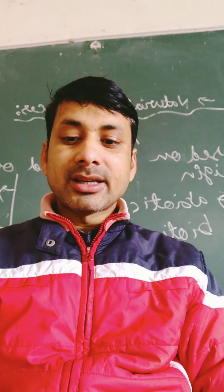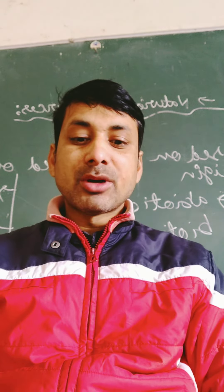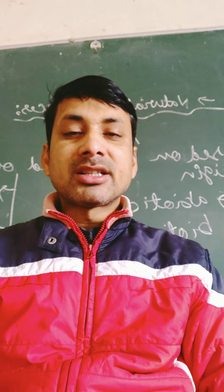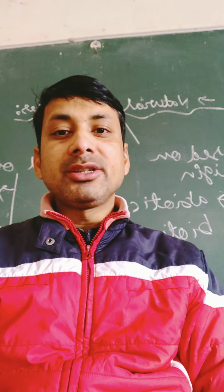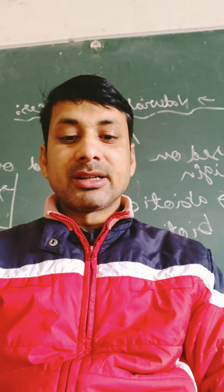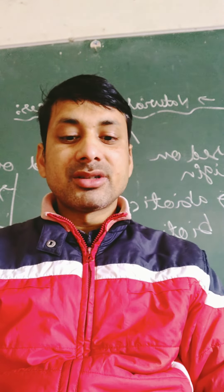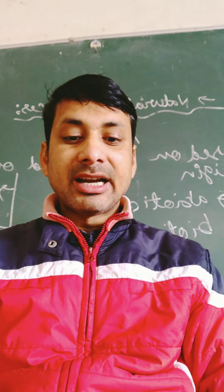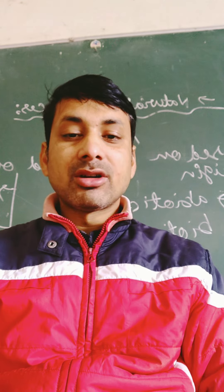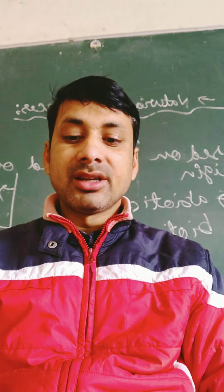और sixth है रस्किन बाउंड — रस्किन बाउंड ने जो बुक लिखी थी वो है The Adventures of Rusty.